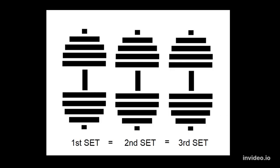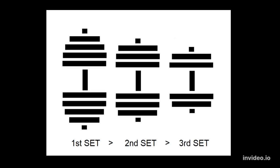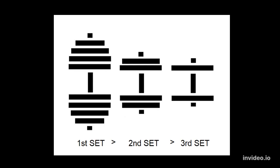Group 1, constant load for all sets, control. Group 2, 5% load reduction after each set, red 5. Group 3, 10% load reduction after each set, red 10.